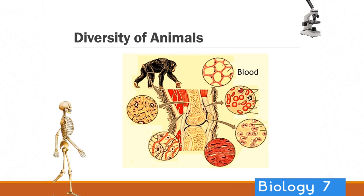Some animals have certain characteristics while others may lack them and still be an animal. Here is an image of a chimpanzee, which is a mammal. Within that mammal's body it has blood transporting oxygen around its body as well as sugars. That blood is comprised of white blood cells which help fight off infection, platelets which help coagulate the blood and form a scab if you get a cut, and red blood cells where oxygen is transported around.